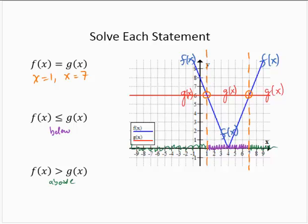Now it's just a matter of writing the solutions. I'm going to use interval notation. The f of x is below g of x on the interval 1 to 7. Since it's an or equal to, I will bracket the endpoints. Where is f of x greater than g of x? That would be to the left of 1, so from negative infinity to 1, and union to the right of 7, so 7 to infinity.